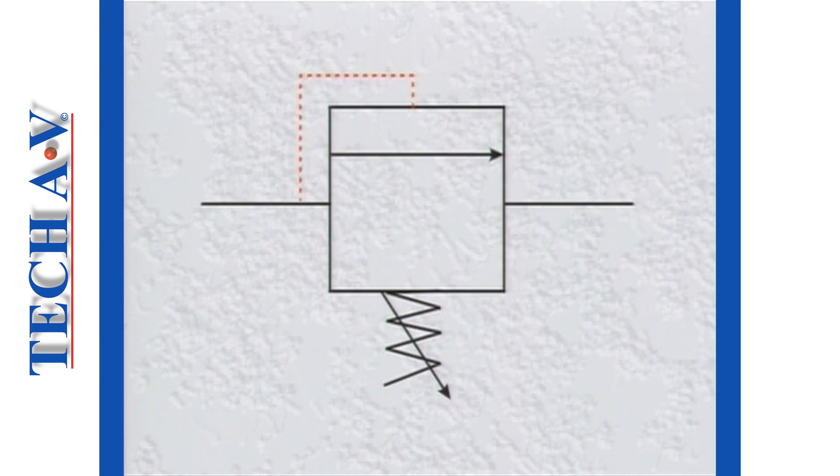The dashed line indicates that the valve is operated by pressure from the working line. The spring symbol tells us that the valve is held closed with spring tension. The arrow drawn through the spring indicates that the spring tension is adjustable.